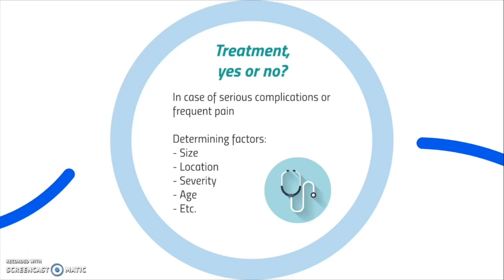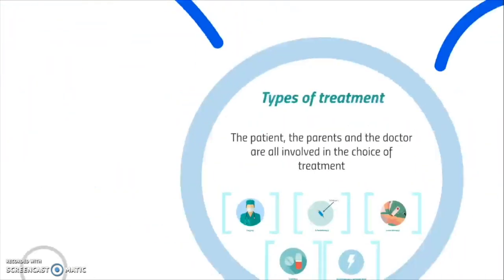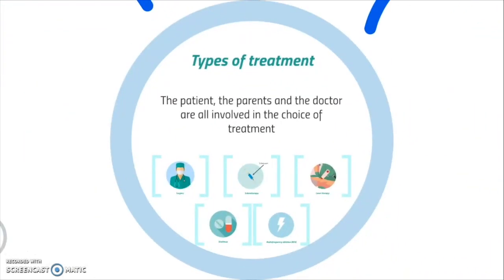Different types of therapies are available. The therapy chosen depends on many factors, such as the size of the malformation, its location, the severity of complications, the age of the patient, etc. The patient and the doctor make a decision about which treatment is best for the patient and whether the treatment is needed at all. If a patient is too young to decide, the parents decide with the doctor if the treatment is necessary. When treatment is chosen, it is often a combination of one of the following therapies.